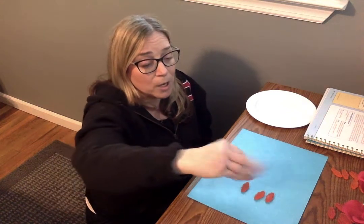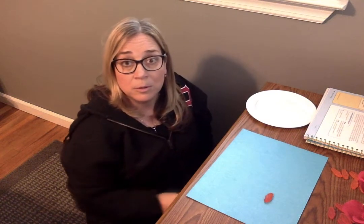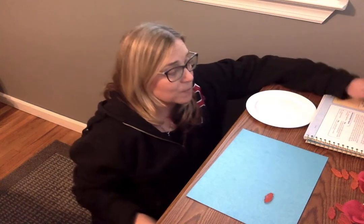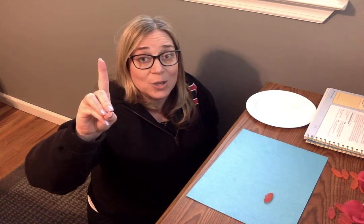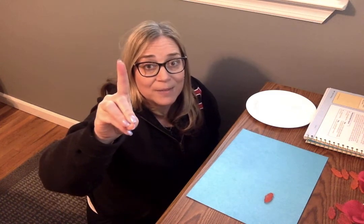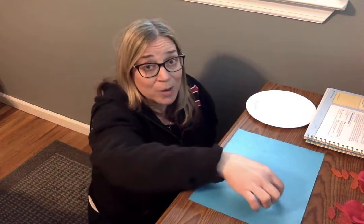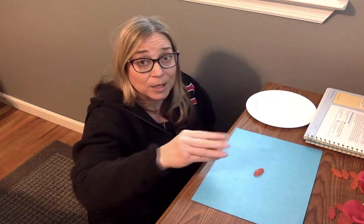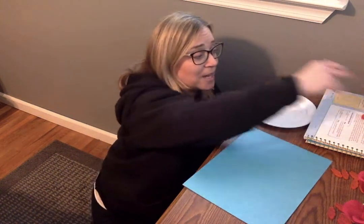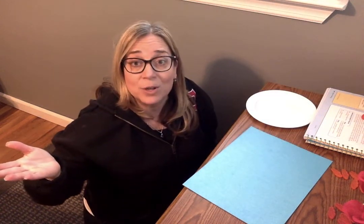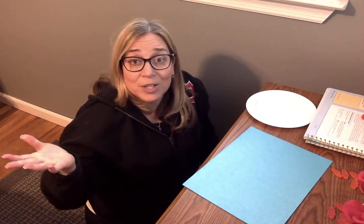Along comes that hungry shark. Here he comes. He ate two. So if you had three fish and the shark ate two, how many fish are left? There's one fish. Should that fish swim really fast away? Here comes the shark. He ate the fish. How many fish are left? There is zero fish. No more fish. They're all gone.